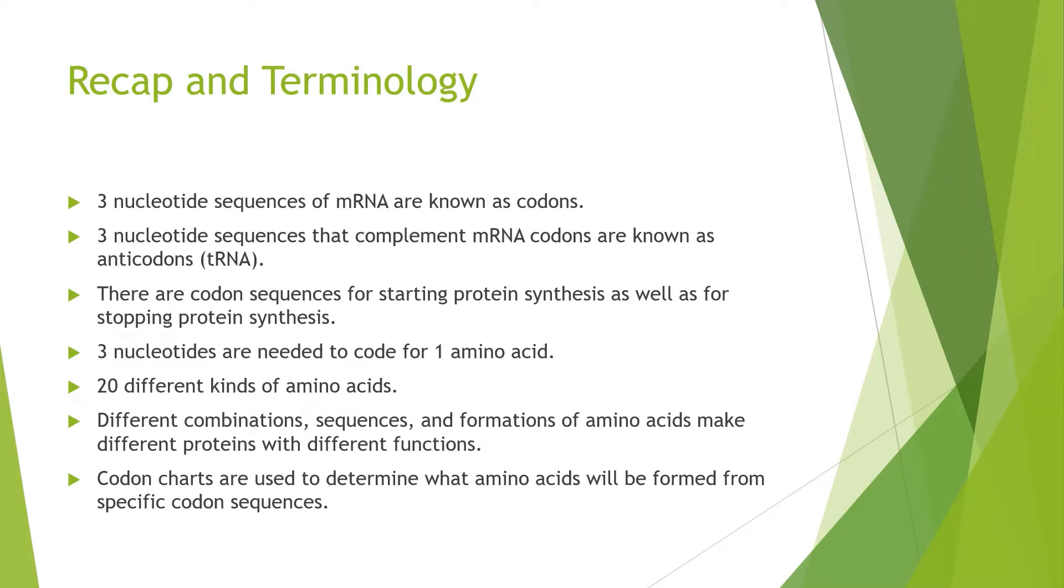Three nucleotides are needed to code for one amino acid. There are 20 different kinds of amino acids, and different combinations, sequences, and formations of amino acids make different proteins with different functions. Codon charts are used to determine what amino acids would be formed from specific codon sequences.